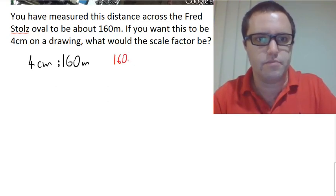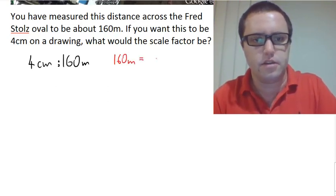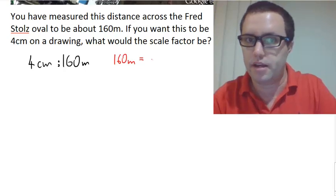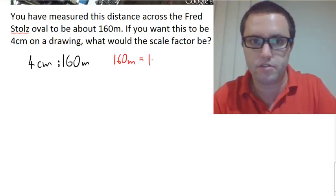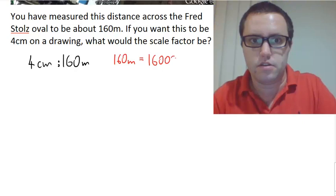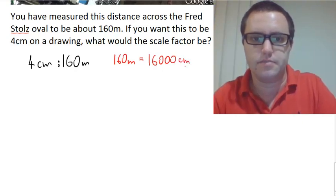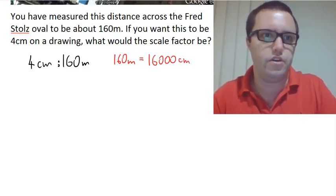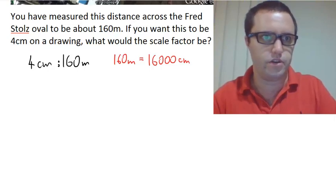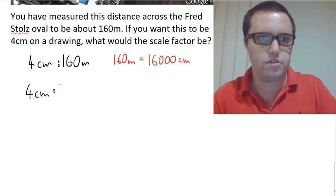160 meters equals—we multiply by 100 to get from meters to centimeters—so is 16,000 centimeters. We know now that 4 centimeters is to 16,000 centimeters.